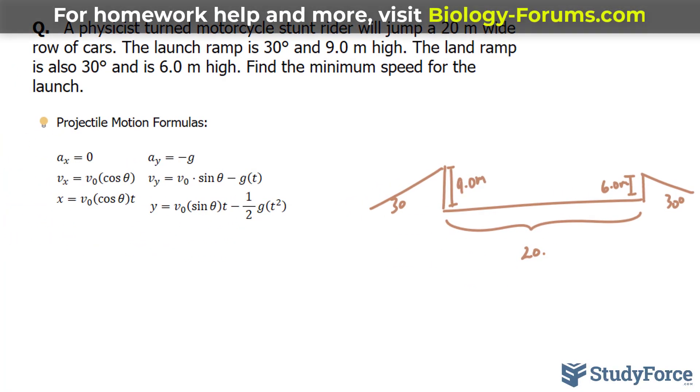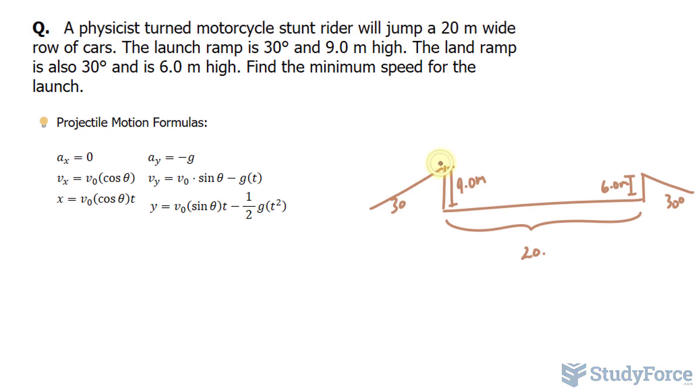The strategy I'll use to solve this is similar to the one I used in question number 4. I want to find out the time that it takes for the motorcycle stunt person to go from here to here, because by finding the time I can then find the initial velocity. The initial velocity will help me find the minimum speed for the launch. So how do I go about doing that?